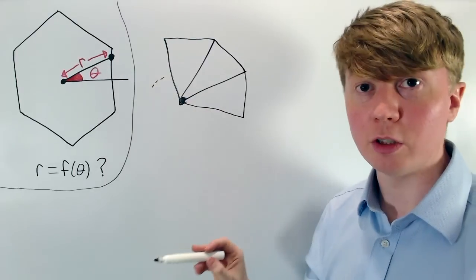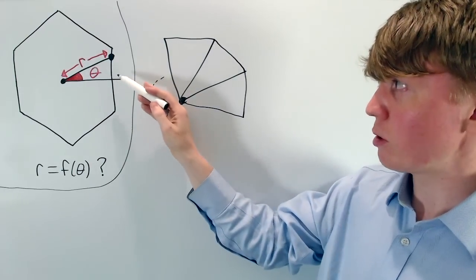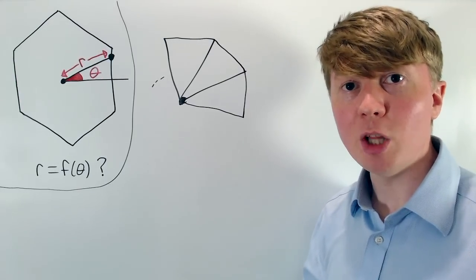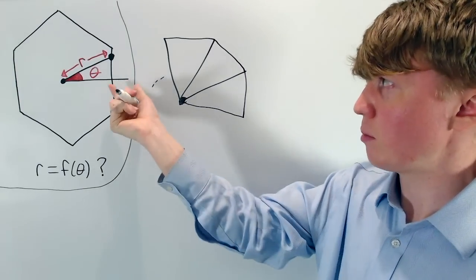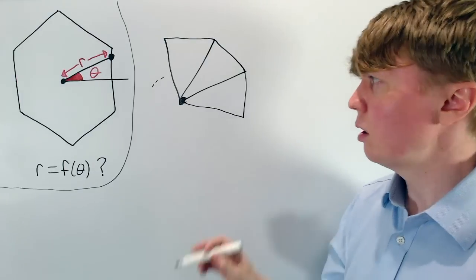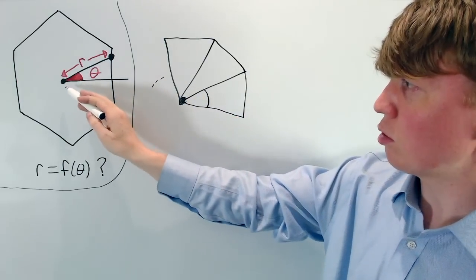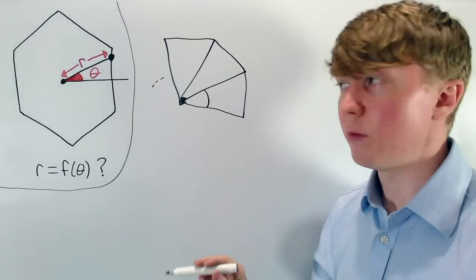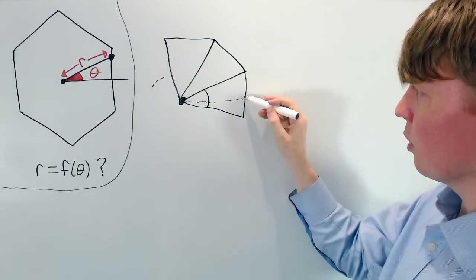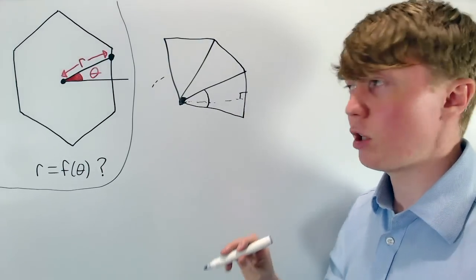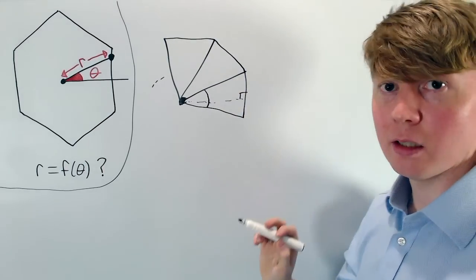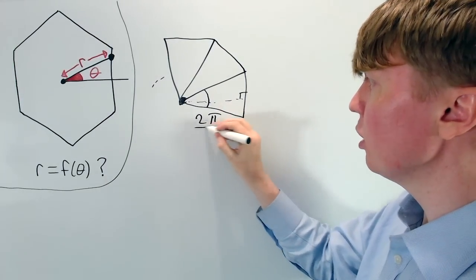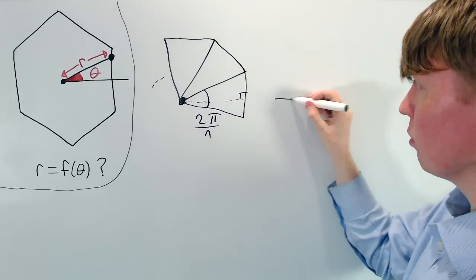We're looking to find r as a function of theta. We'll start by finding r as a function of theta on the top half of the first side, then generalise to the bottom half. For our general polygon, we need to find the equivalent of this horizontal length, which in the hexagon picture tells us the value of r. We've got n sides, so the big angle here is 360 degrees divided by n, or 2π/n radians. We'll copy out half of this triangle to work with.